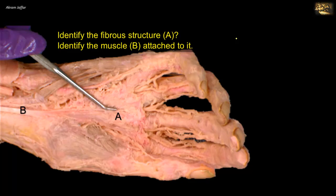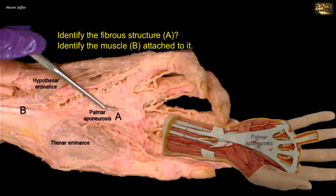Identify the fibrous structure A and the muscle B. This is the thickening of the deep fascia of the palm. The deep fascia of the palm is thin over the thenar and hypothenar eminences, but is thick in the central part of the palm where it forms the palmar aponeurosis. The palmar aponeurosis is generally triangular in shape. The distal end of the aponeurosis divides at the roots of the fingers into four bands that pass to the fingers, each fused with the fibrous flexor sheath of that finger. The palmar aponeurosis is firmly attached to the overlying skin, thus improving the grip, and it sends deep septa that divide the palm into fascial spaces which limit the spread of infection.